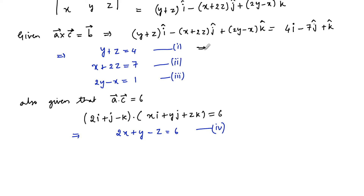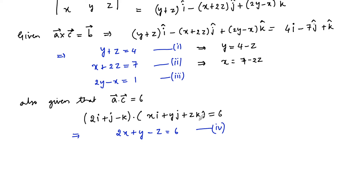From equation 1 we can write y is equal to 4 minus z, and from equation 2 we can write x is equal to 7 minus 2z. So x and y are expressed in terms of z.